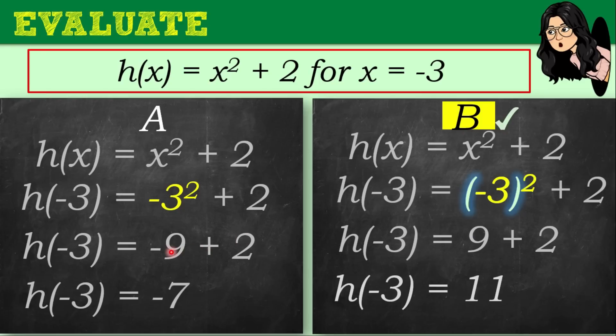If you have negative 9 plus 2, it will lead to a different answer compared to 9 plus 2, which gives 11. The correct answer is 11. Do not forget to enclose your given value of x in a parenthesis to avoid mistakes. The correct answer is letter B. I hope that's clear.